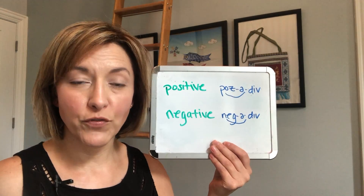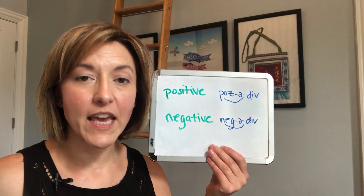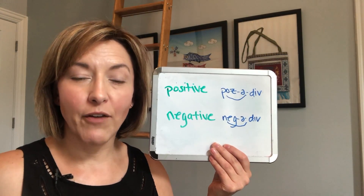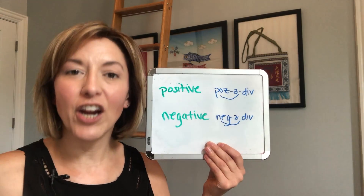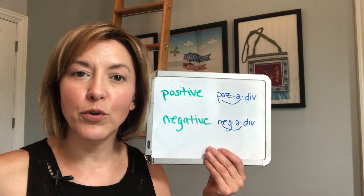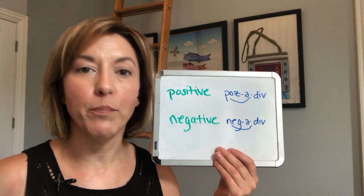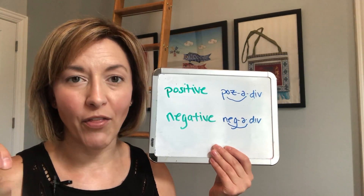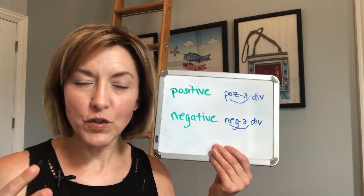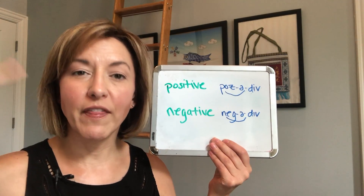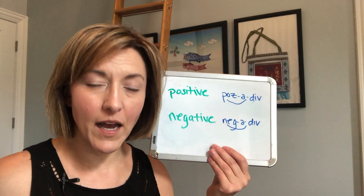Then move to that short I sound and end with a V. The V sound is made by gently biting your lip with the air moving out of your mouth. A common mistake is that people close their lips and their mouth, making it sound more like a B sound. Make sure your mouth stays open so the air can continue moving out. That gives you 'pausa-div' — 'positive.'